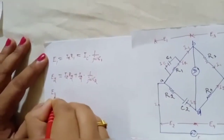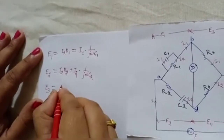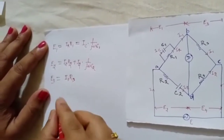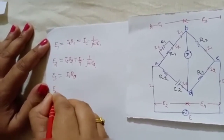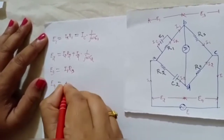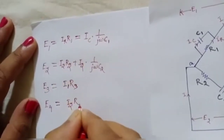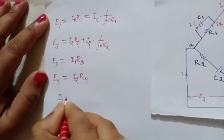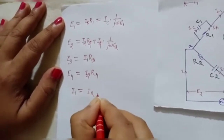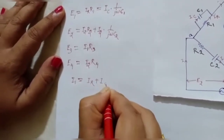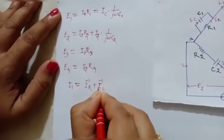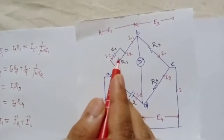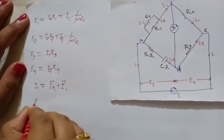E3 is in a resistive branch, so E3 = I1·R3. E4 = I2·R4. The value of I1 is the phasor sum of IR and IC: IR + IC = I1. This is the current relationship for branch one.